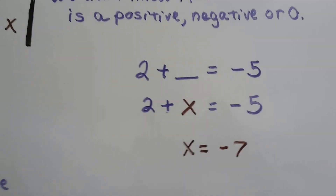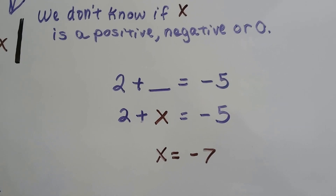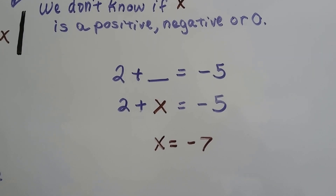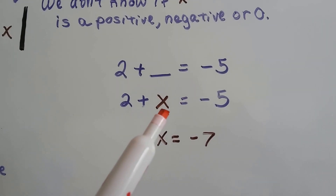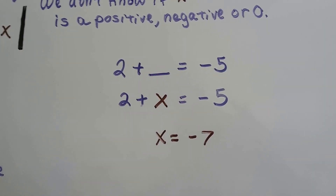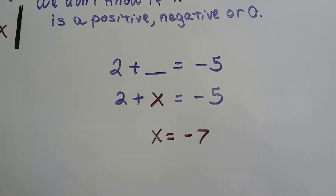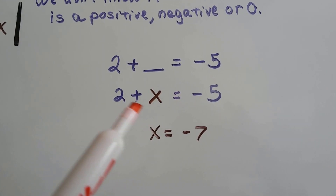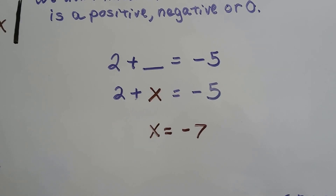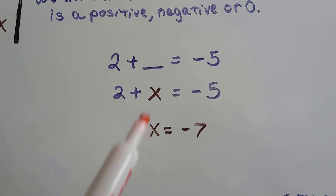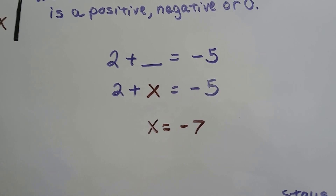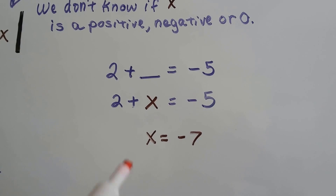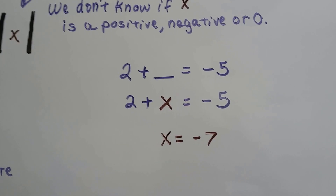Here's why: remember in first or second grade when a problem would say '2 plus blank equals negative 5' and you'd fill in the blank? Think of a variable as that blank line — x could be a positive or a negative. Don't look at x as a positive x; it's just an unknown. And if x in this case is negative 7, then it's 2 plus negative 7. So x, even though it doesn't have a negative sign, could be negative.